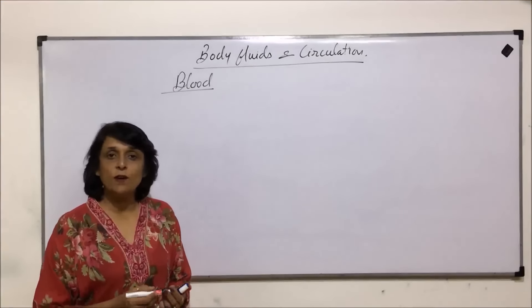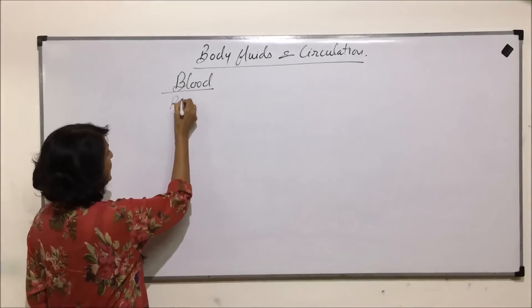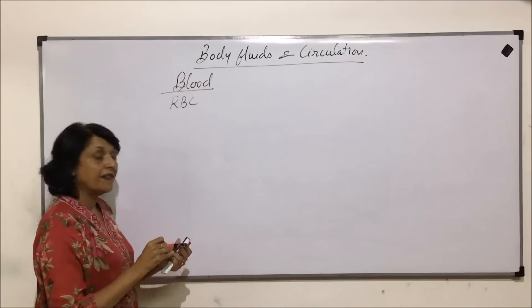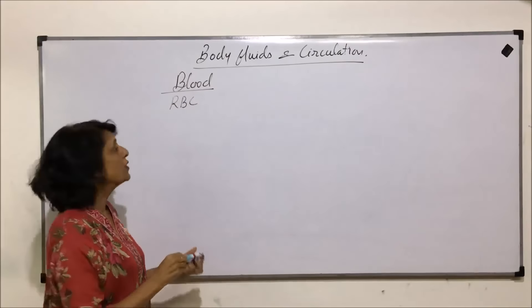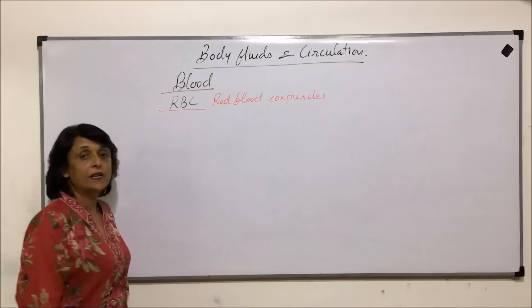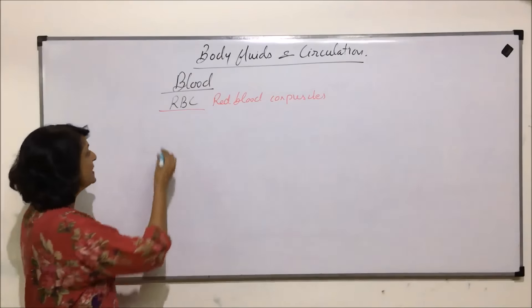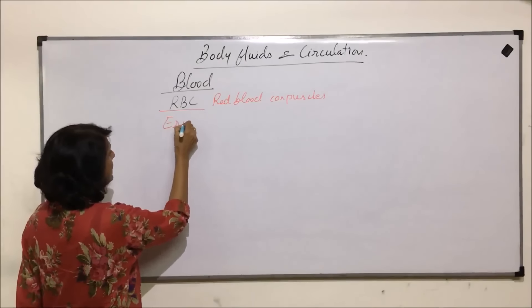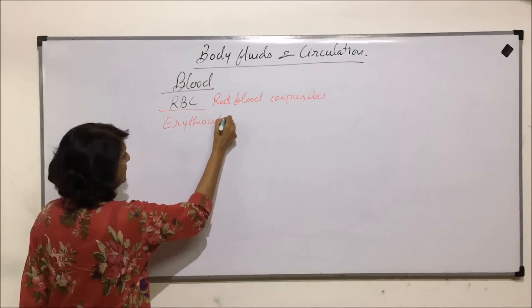In this segment, we'll talk about RBCs, that is red blood corpuscles. These red blood corpuscles, or RBCs, are also known as erythrocytes.